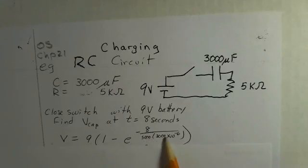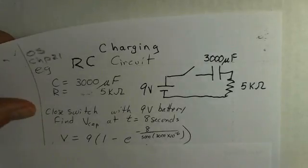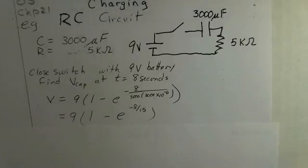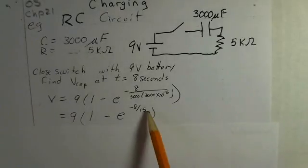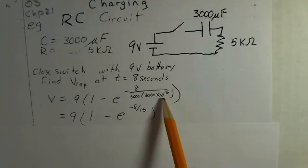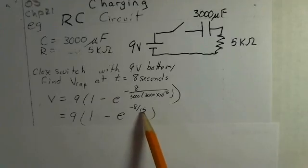R and C, 5,000 ohms, 3,000 microfarads. If we simplify this just a little bit, the RC number here, the time constant is 15 seconds. Resistance times capacitance yields seconds and the number happens to be 15.